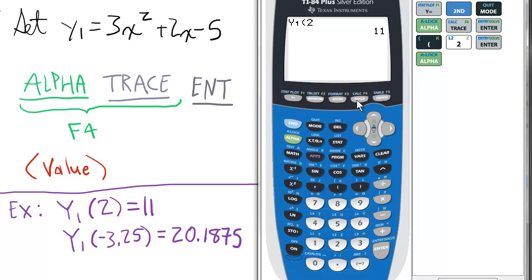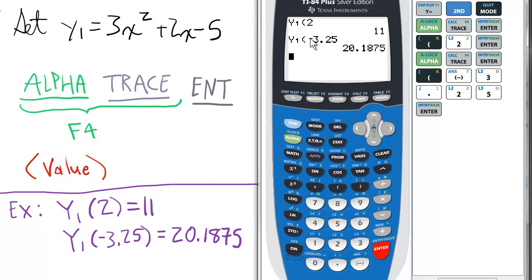Press ALPHA, TRACE for F4, ENTER to select Y1, and open parentheses. Let's enter -3.25 and press ENTER. So f(-3.25), the Y1 function, is 20.1875.